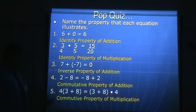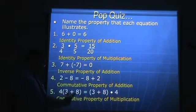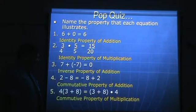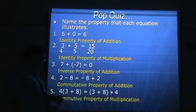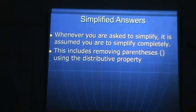The multiplication order changed — originally you had four times this quantity, and now you have this quantity times four. The only thing that changed was the order of the multiplication; I did not mix the adding and the multiplying. One other thing to note: whenever you have to simplify, you have to assume that you have simplified completely, and this includes removing parentheses. You may use the distributive property to do that.